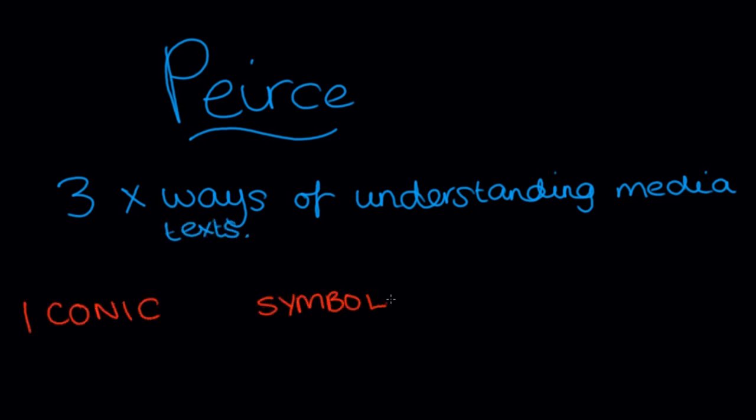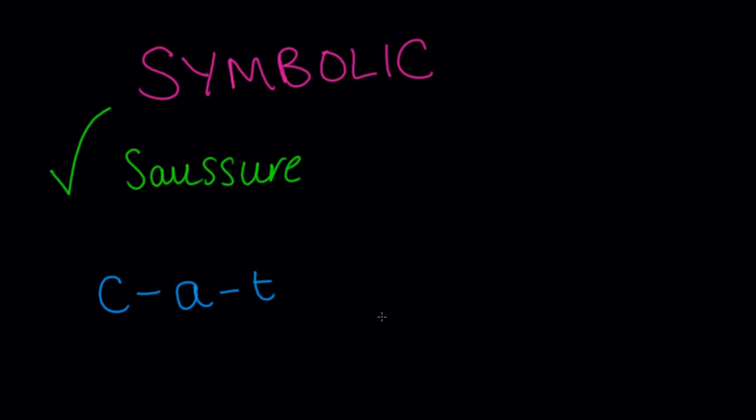He said we have three prolific ways of understanding media texts: iconic, symbolic and indexical. He explained that a symbolic sign refers to the work of Saussure where the relationship between the signifier and the signified are arbitrary, like the word cat that we addressed earlier.